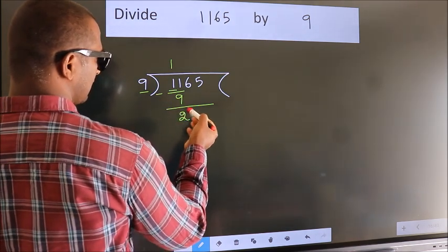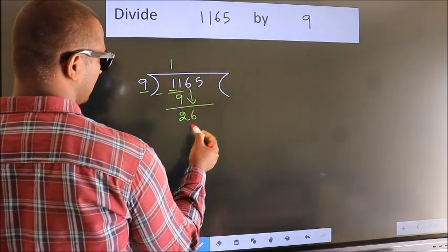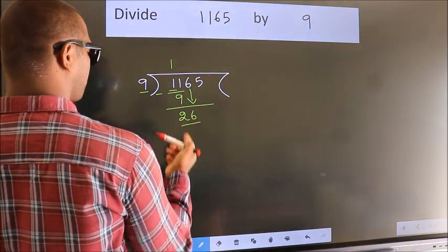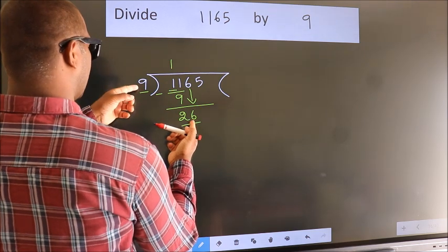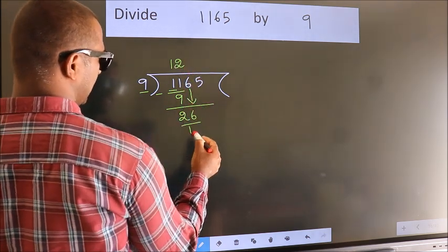After this, bring down the beside number. 6 down, so 26. A number close to 26 in the 9 table is 9 twos, which is 18.